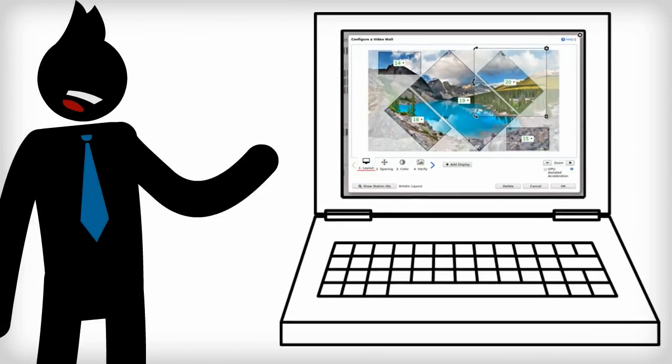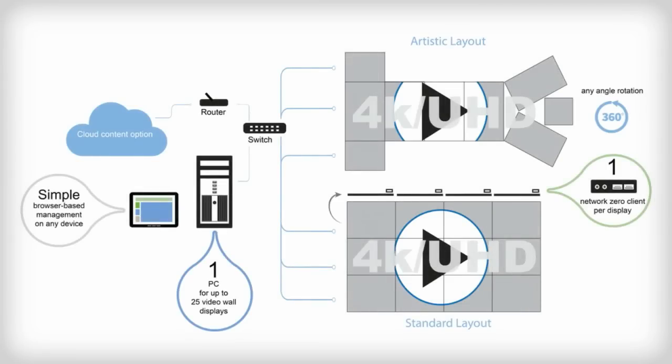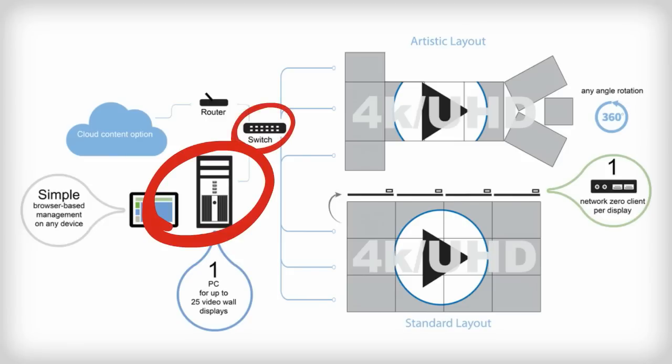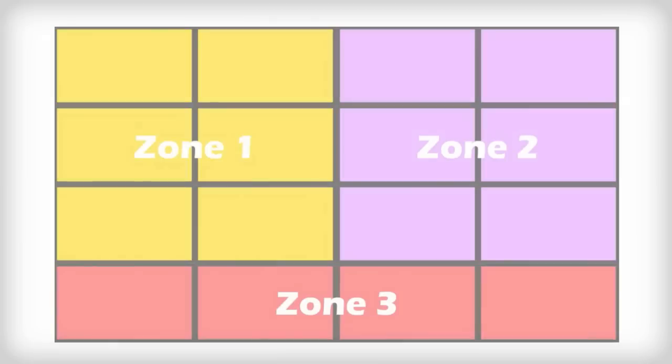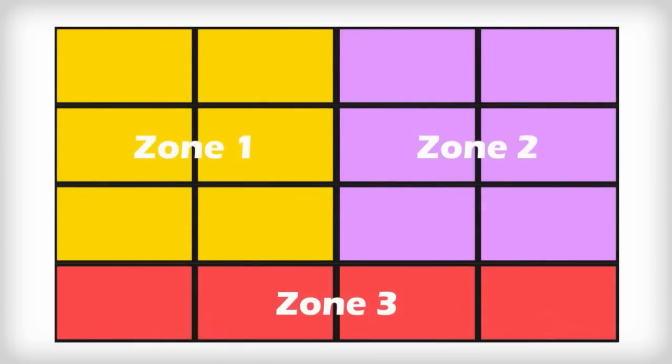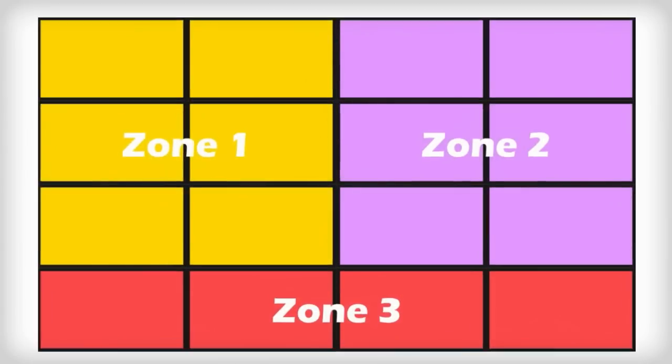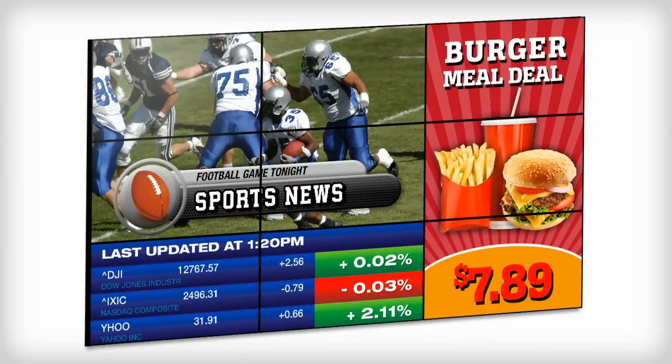The PC running Userful can sit anywhere on the local area network and is entirely managed through a browser. Preset zones mean you can put different content on different areas of the video wall and change them on the fly.